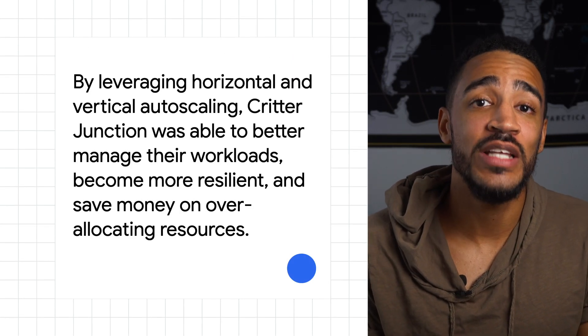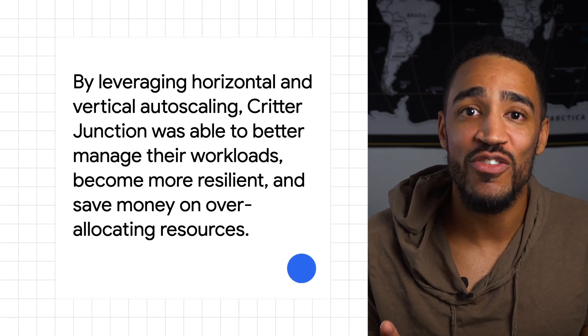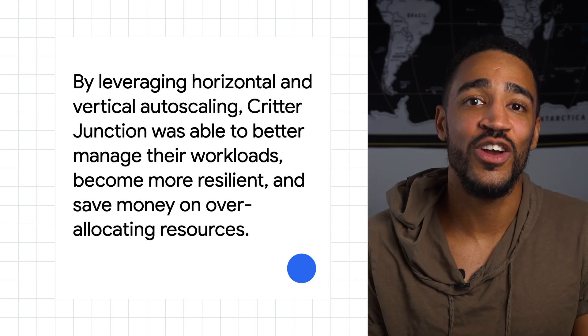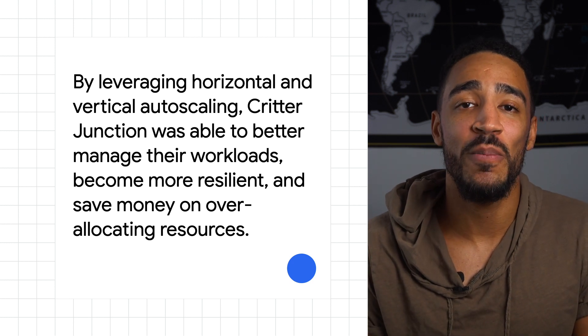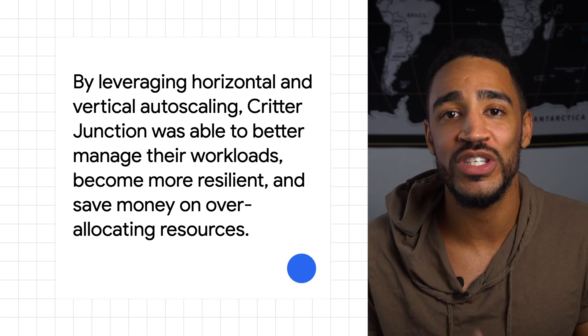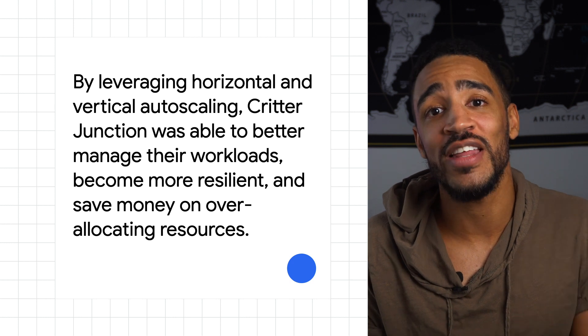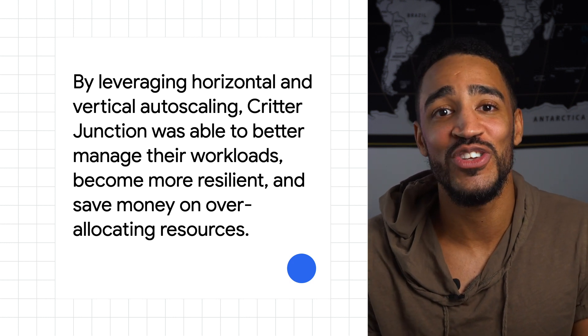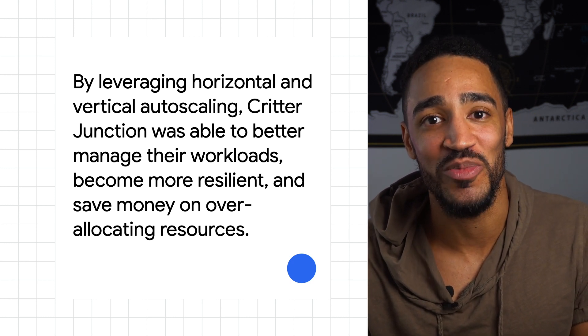Guessing what resources your app needs is tricky, but by leveraging horizontal and vertical auto-scaling, Critter Junction was able to better manage their workloads, become more resilient, and save money on over-allocating resources. All that was left to do was celebrate their well-earned traffic boost. So, that's a wrap for this episode of Season of Scale. Stay tuned to learn how Critter Junction continues to improve the design of their app architecture and dev processes. And remember, always be architected.